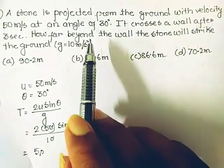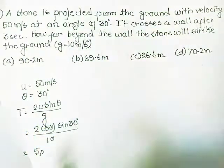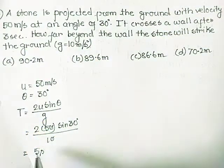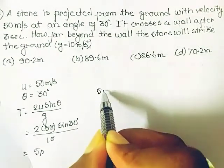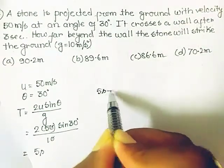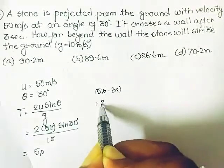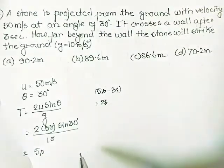So it just crosses the wall after 3 seconds. Total time of flight is 5 seconds, so it will travel for 2 more seconds after crossing the wall.